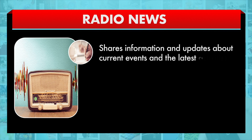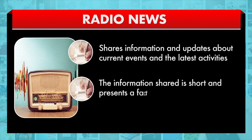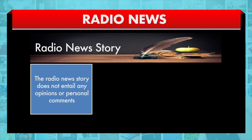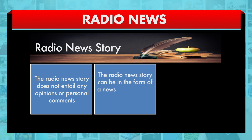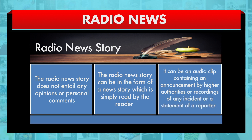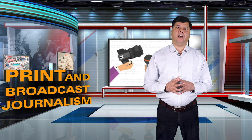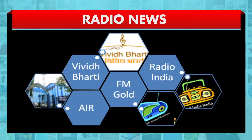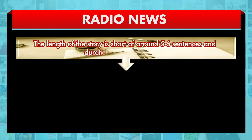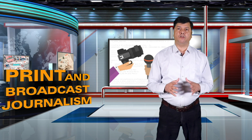Radio shares information and updates about current events and the latest activities. The information shared is short and presents factual reports of events related to political, social, educational, business and sports matters. The radio news story does not entail any opinions or personal comments. The story appears in different formats, such as audio clips simply read by the reader, announcements by higher authorities, or recordings of any incident or statement of a reporter. In India, the main radio news channels are All India Radio, Vivida Bharati, FM Gold, Radio India and all FM channels. The length of the story is short, around 5 to 6 sentences and a duration of 25 to 30 seconds. It also follows the inverted pyramid style as followed by other mediums of news.